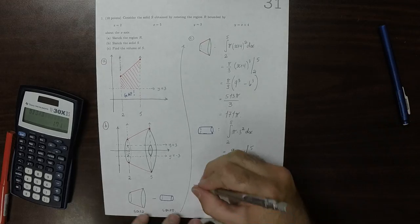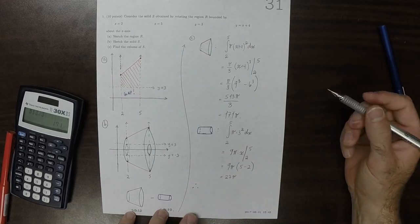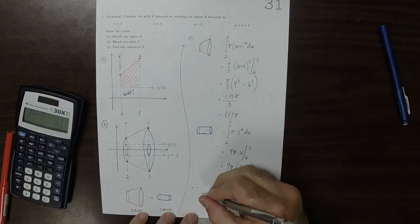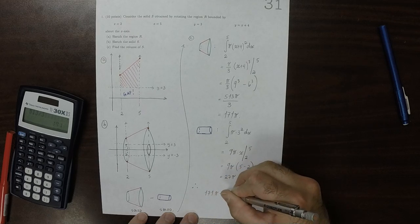So the volume of the solid requested is the difference of these two volumes. This is 171 pi minus 27 pi. So 171 minus 27 is 144 pi.